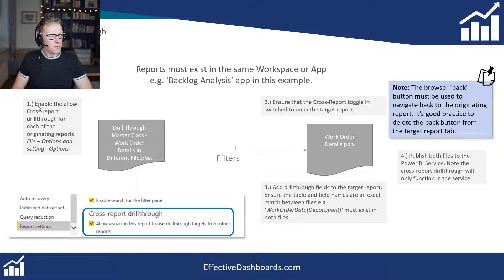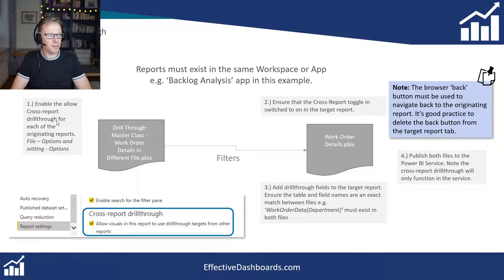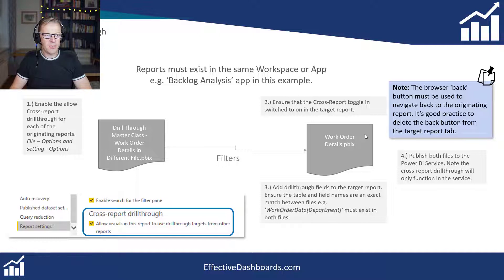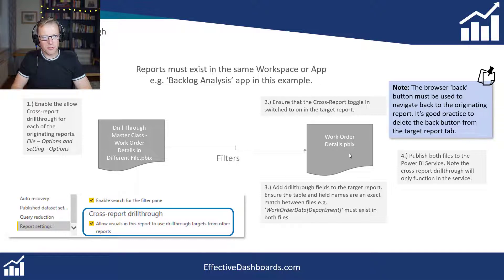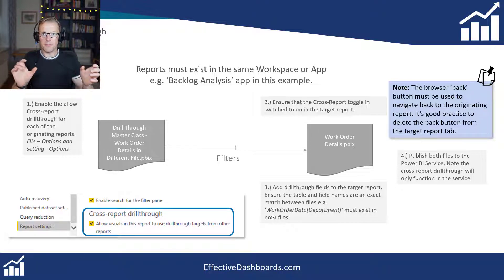Carrying across the filters but on a different PBIX file. There are four steps to setting this up. The first step is to set up a configuration option on the original file to allow it to access other files as a drill through target. The second step is to set up a toggle button on the target file to make sure it can be used as a drill through target. Then we add the drill through fields to the target file, and finally we publish both files to the Power BI service. One key thing to cover: the column name and table, or the measure name, must be exactly the same in both files.